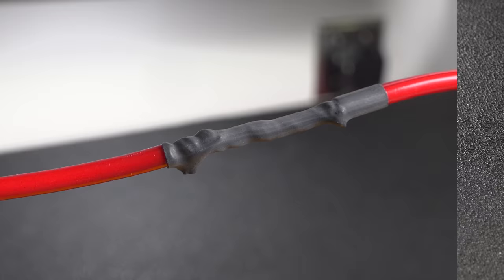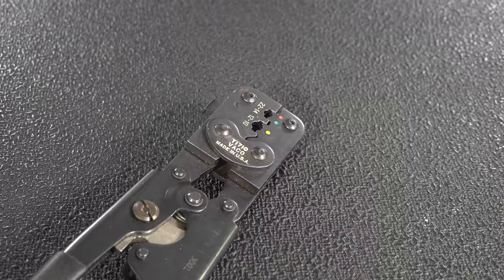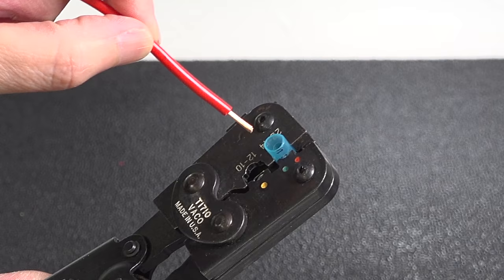And then some people will turn to a connector like this. These don't require any soldering. You just strip your wire and insert them into the connector, and then you crush the connector down. Now this is a special ratcheting tool that applies a lot of pressure to hold that wire tight.